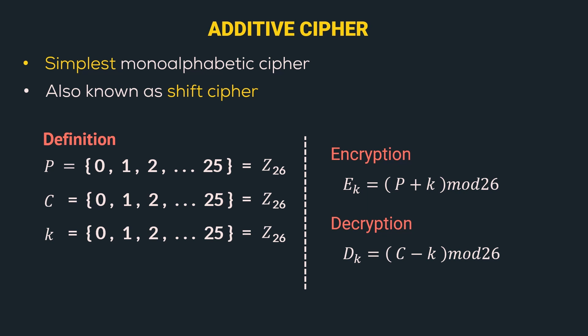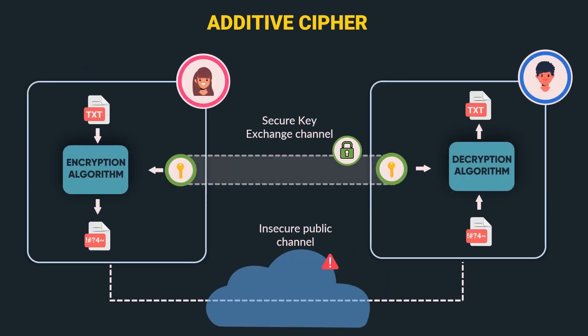This was the mathematical definition of additive or shift cipher. Now let's have a look at its diagrammatic representation. As we have seen in the symmetric key cryptosystem video, this is the general diagram for symmetric key cryptosystem. If you haven't seen that video, I would recommend you to see it first because we have defined all the notations seen in the previous slide, and this diagram is explained in detail in that video. Refer the i-button for its link.